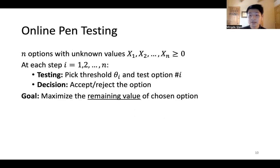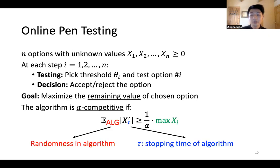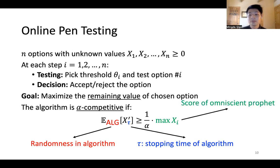The objective is to maximize the remaining value in the option we choose. We say that an algorithm is alpha-competitive if the following holds. On the left-hand side, the expectation is over the randomness in the algorithm, and tau is the stopping time — the index of the option we accept — so x_tau prime is the remaining value of the chosen option. On the right-hand side, the maximum x_i can be viewed as the score that an omniscient prophet can achieve, since if the prophet knows the values up front, it can do no testing and just pick the option with the highest value. We say our algorithm is alpha-competitive if we achieve a 1/alpha fraction of the prophet's score.